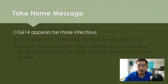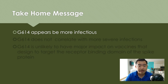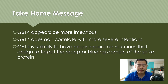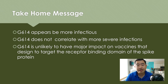So the take-home messages are: first, the G614 mutation appears to be more infectious, based on observations in the public as well as in vitro experiments. Second, G614 does not correlate with more severe infections — a result from three independent observations in the UK, Seattle, and Chicago. And third, G614 is unlikely to have a major impact on vaccines designed to target the receptor binding domain of the spike protein. This is what scientists believe so far.